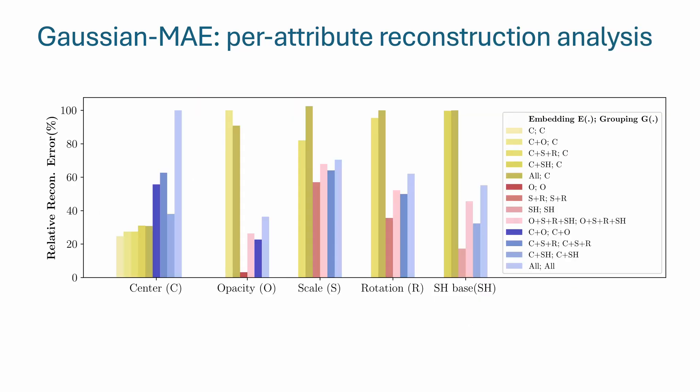We evaluate the relative reconstruction error for each Gaussian parameter using three different grouping methods: green for centroid grouping, red for Gaussian feature grouping without centroid, and blue for feature grouping with centroid. The results indicate that incorporating additional features into the grouping process, especially when combined with centroid, leads to improved reconstruction accuracy.